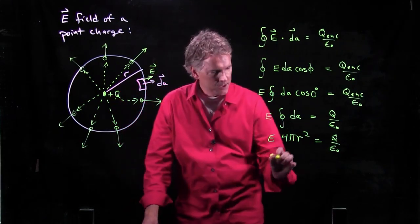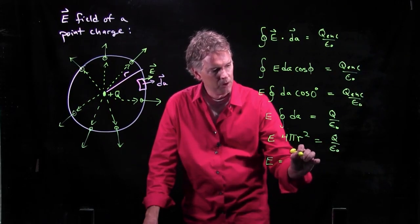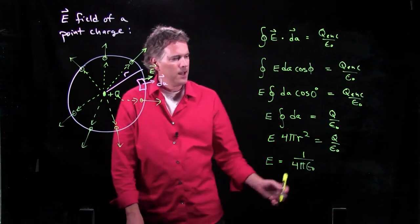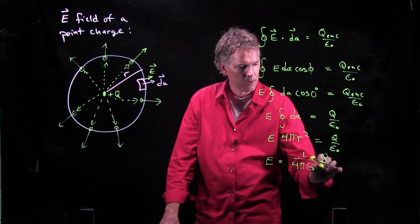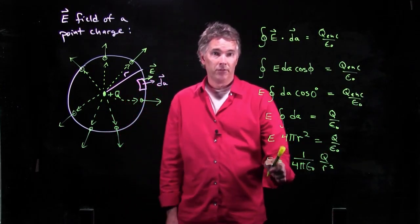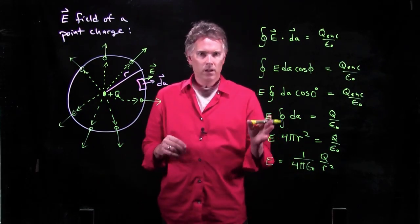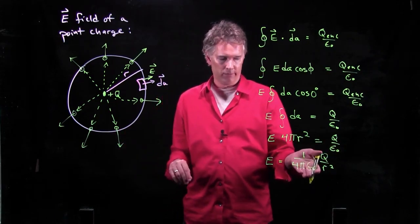And now we are basically done. We just have to divide and we get E is equal to 1 over 4 pi epsilon not times q over r squared. And that's the electric field of a point charge. Now, you look at this answer and you say, okay, that looks right, except I don't have any direction there. Where do we get our direction from?